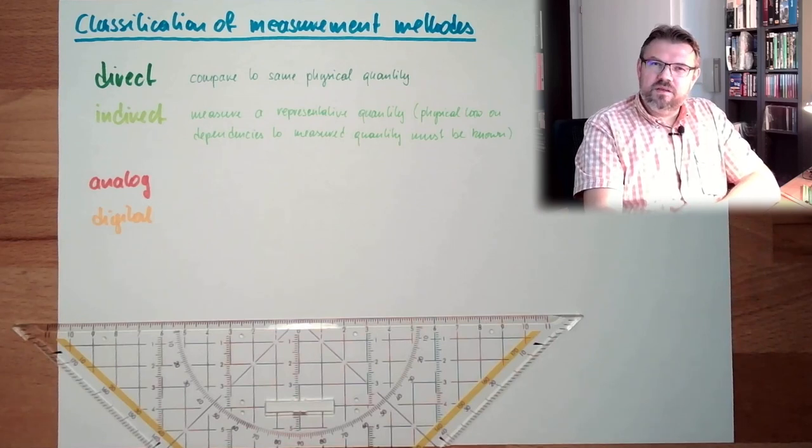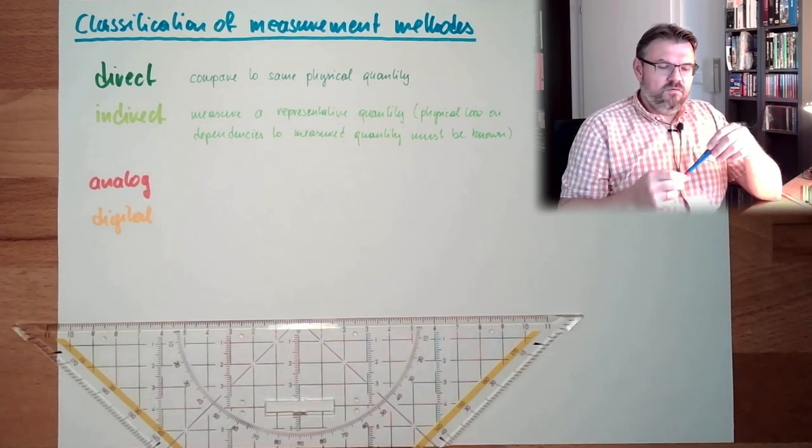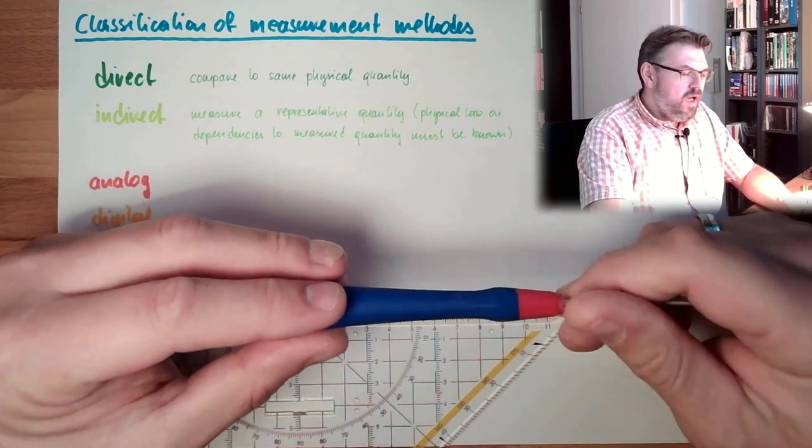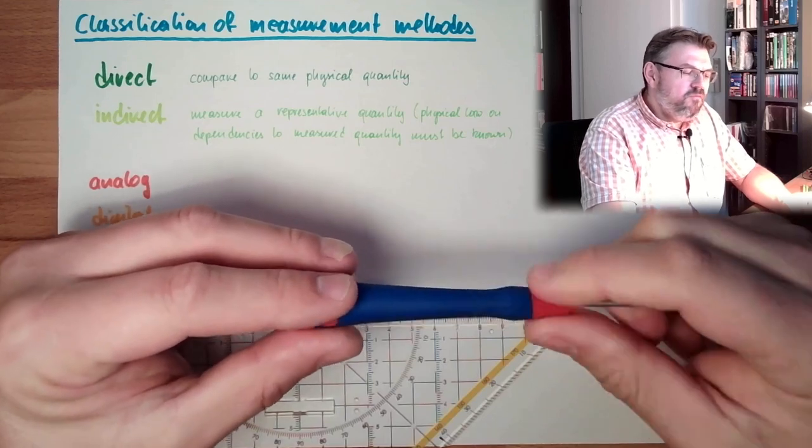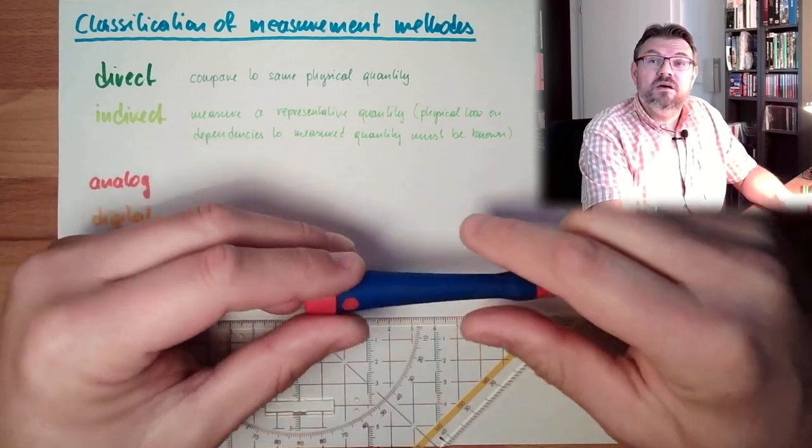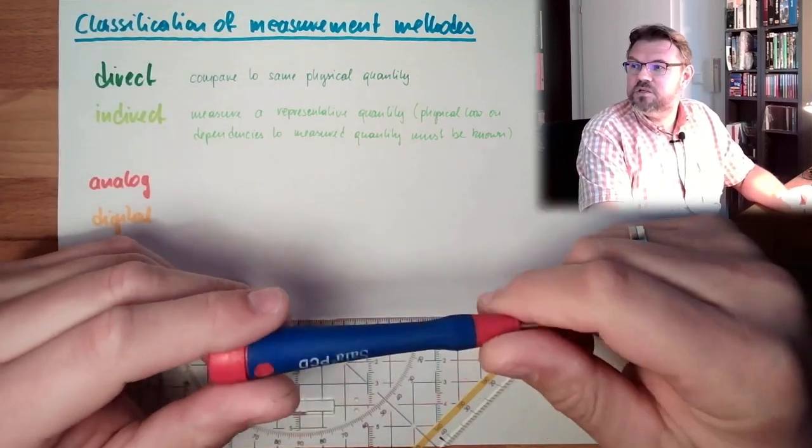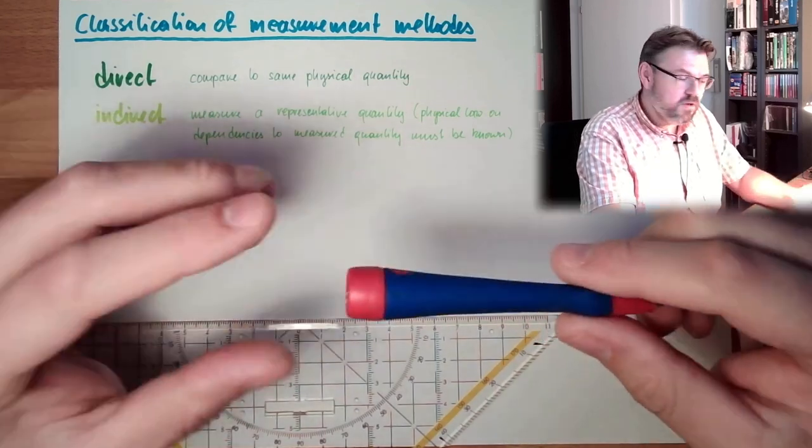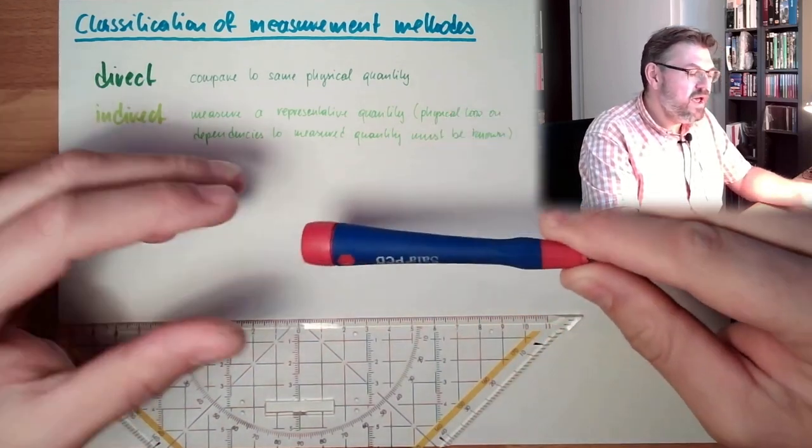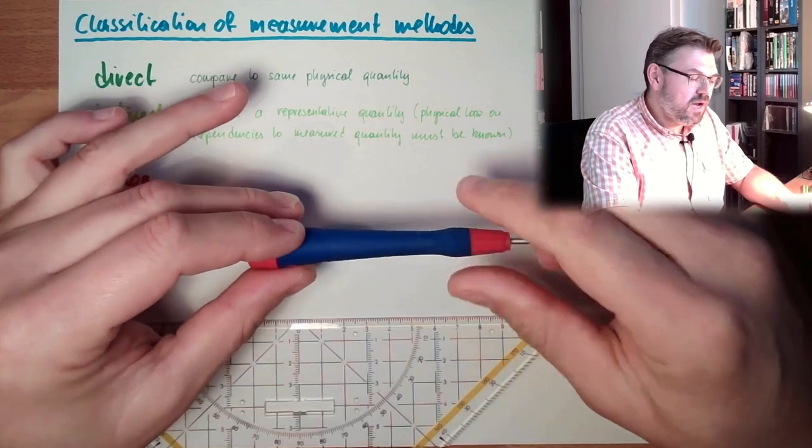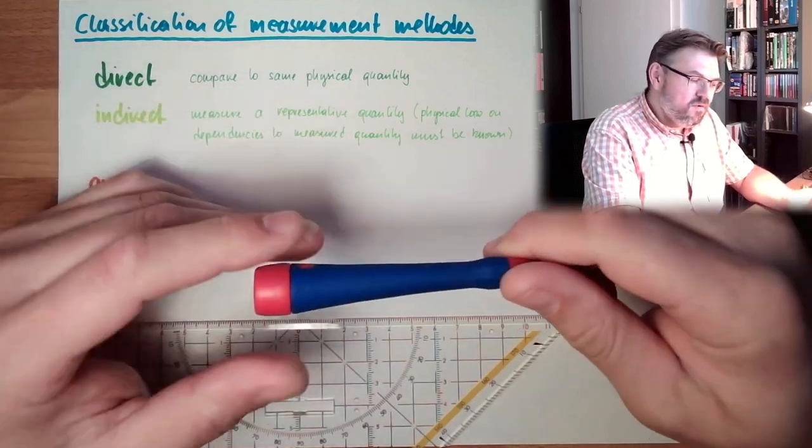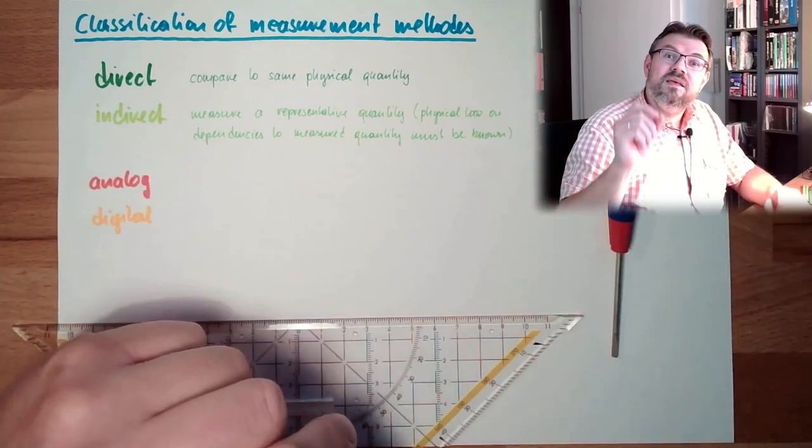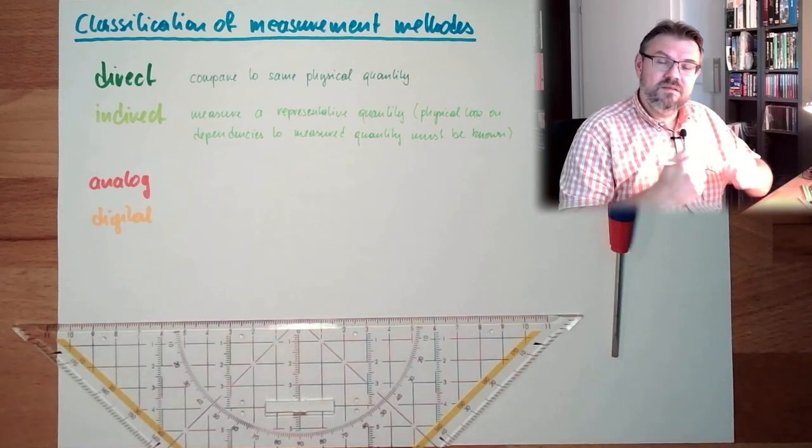If you want to measure the speed of a rotating shaft, you can either put there, for instance, you have a rotating shaft, and you put there a generator on. And if this generator is generating voltage, the more the speed of the shaft is, the higher the voltage the generator will produce. This is a typical analog measurement. So, the information, also indirect, because I measure the voltage and want to know the speed. So, it's an indirect measurement. And it's an analog measurement. So, the information is stored somehow in the size of a quantity.